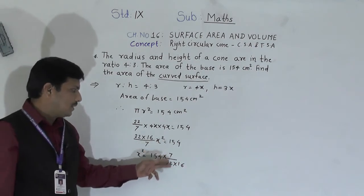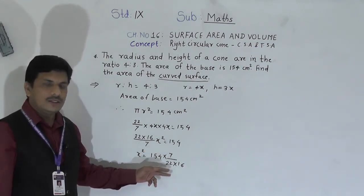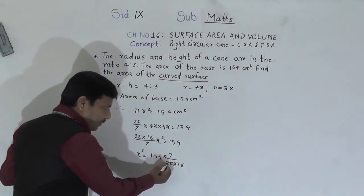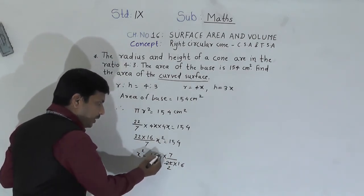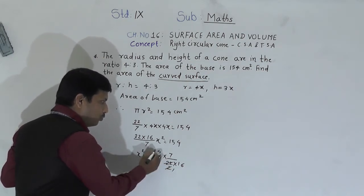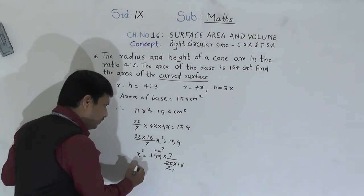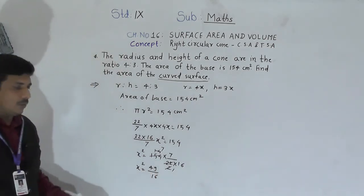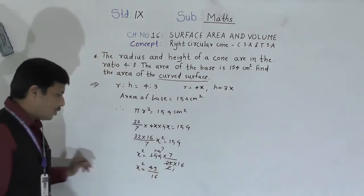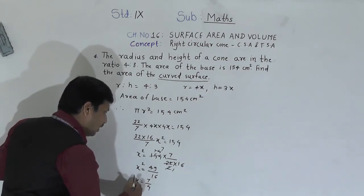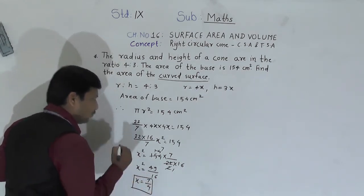So 154 × 7 upon 22 × 16. Here 154 and 22 are both divisible by 11: 154÷11=14, 22÷11=2. That gives x² equal to (7 × 7) / 16 = 49/16. Both 49 and 16 are perfect squares. So x equals 7/4.